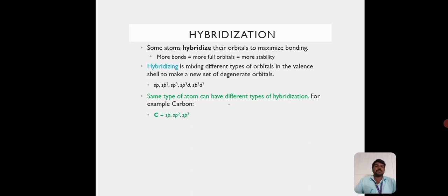It is SP, SP2, SP3, SP3D, SP3D2. The same type of atom can have different types of hybridization. For example, carbon. Carbon can have SP, SP2, and SP3 hybridization.